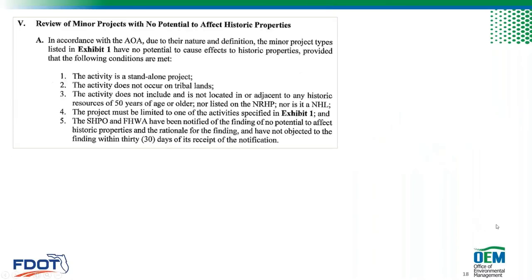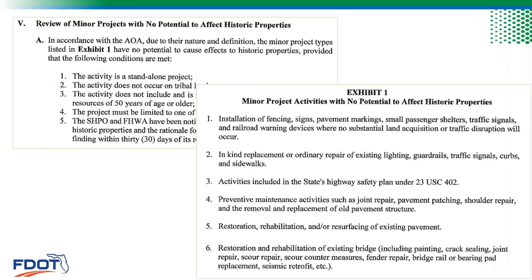Stipulation 5 of the Section 106 PA is for minor projects with no potential to affect historic properties. The conditions are: the activity is a standalone project; it does not occur on tribal lands; it does not include and is not located in or adjacent to any historic resources; the project must be limited to activities specified in Exhibit 1; and SHIPO or FDHR has been notified of the finding of no potential to affect historic properties and does not object within 30 days. The Exhibit 1 list is complete at six items — all very minor projects with no potential to affect historic properties.